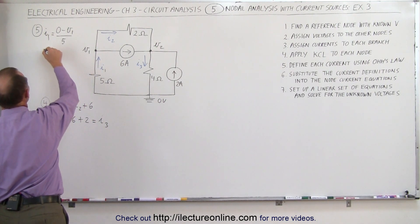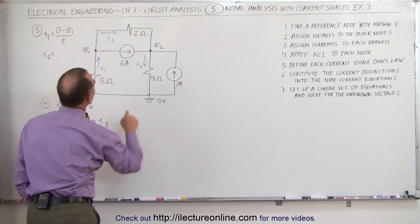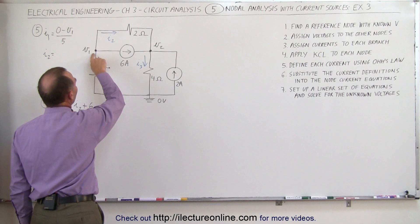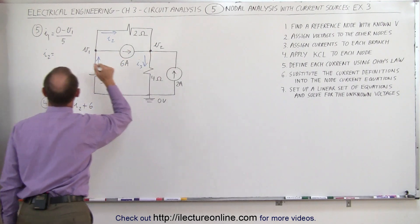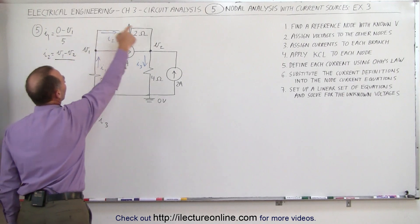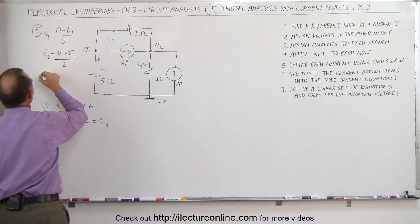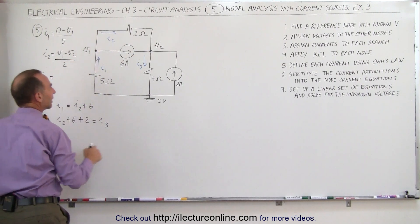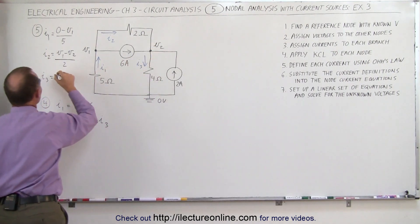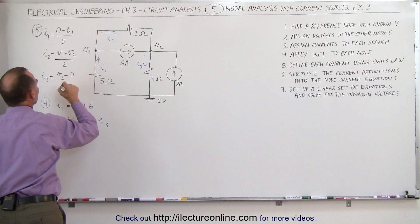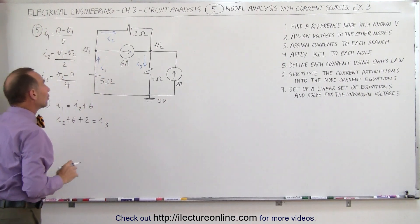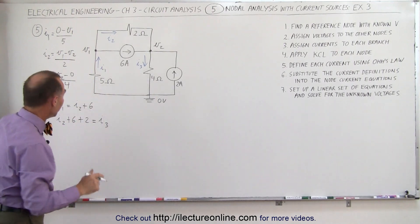Second, I2 is equal to V1 minus V2 divided by the resistance, which is two ohms — V1 being the higher potential and V2 the lower potential. And finally, I3 can be found by taking V2 minus zero divided by four ohms. So now we have all three currents defined in terms of voltage.